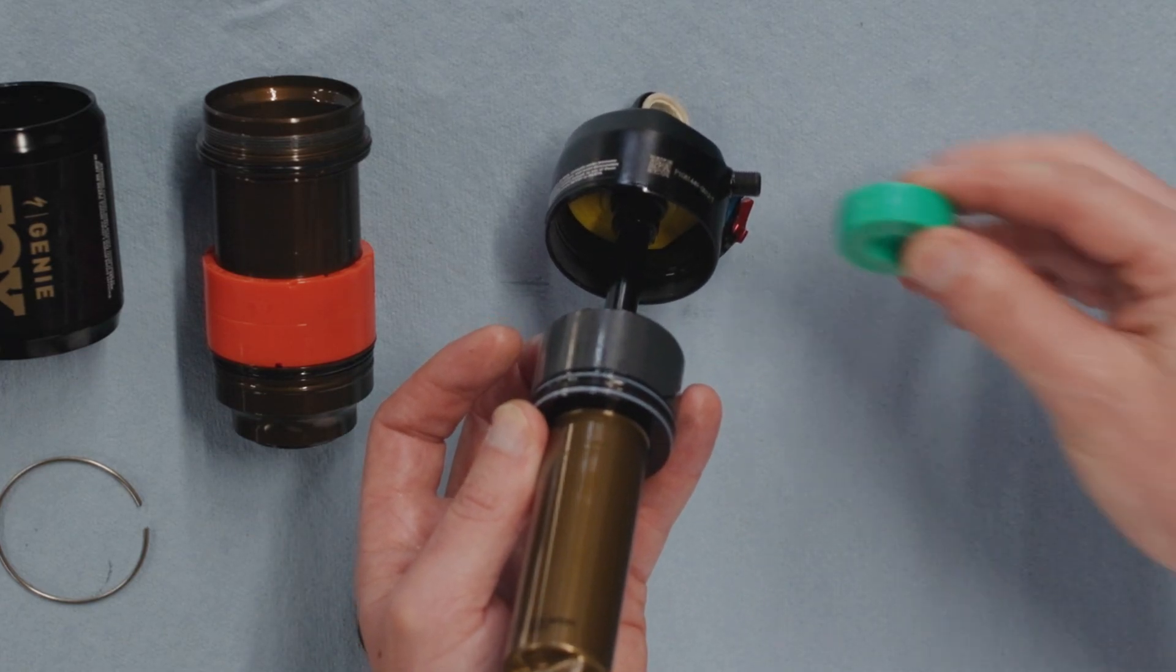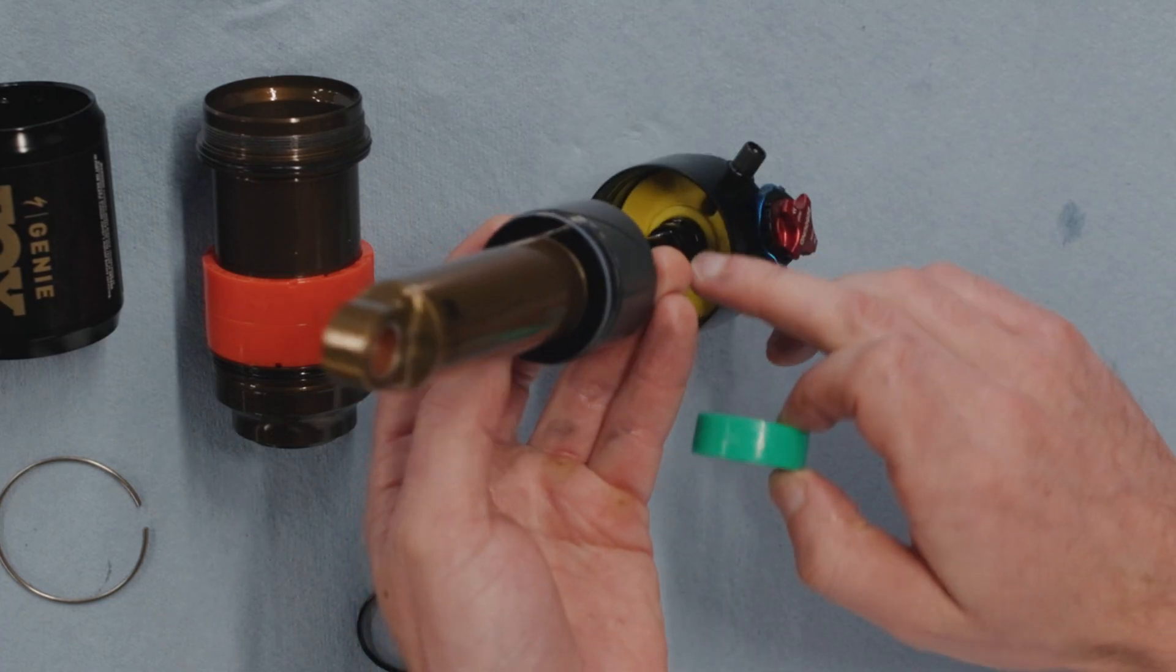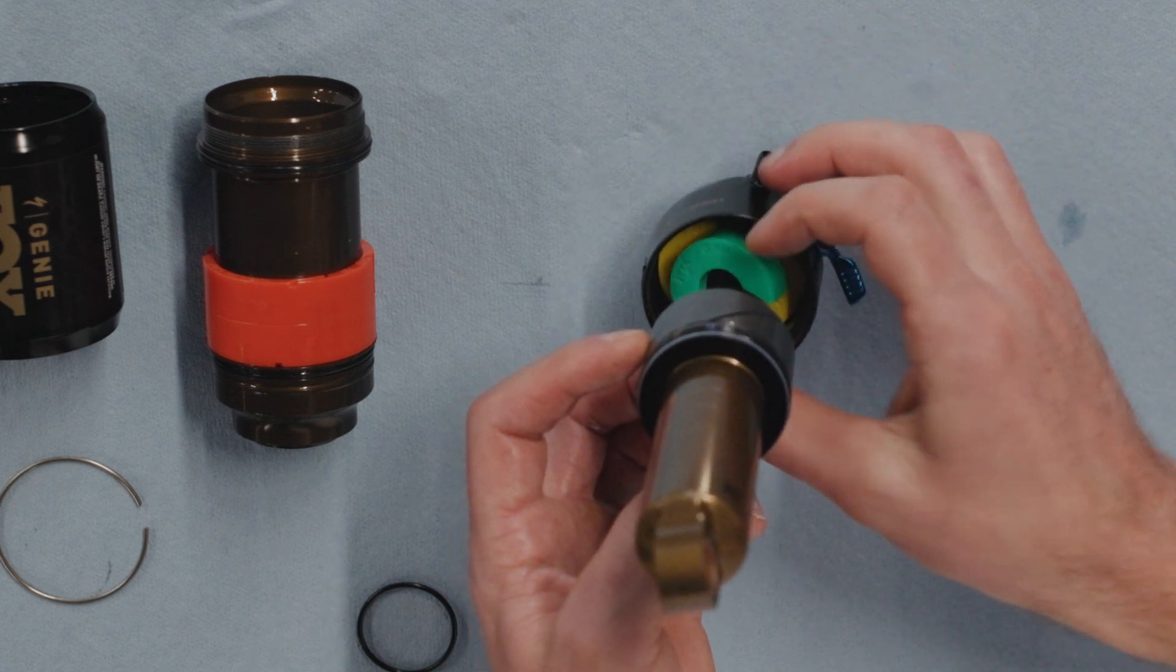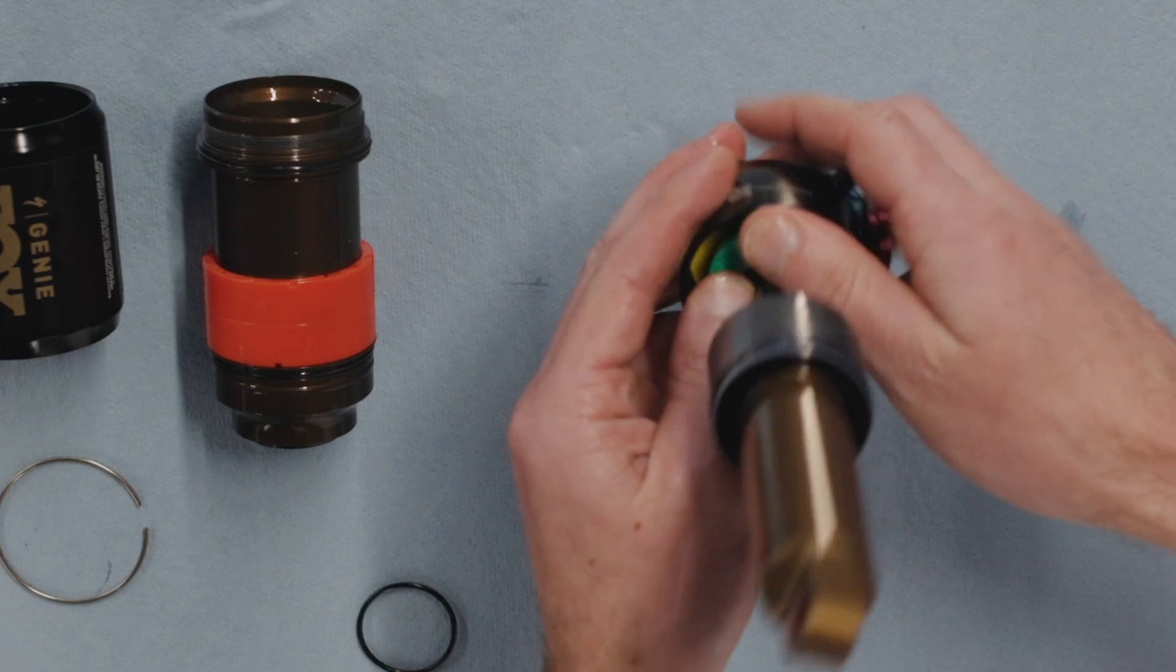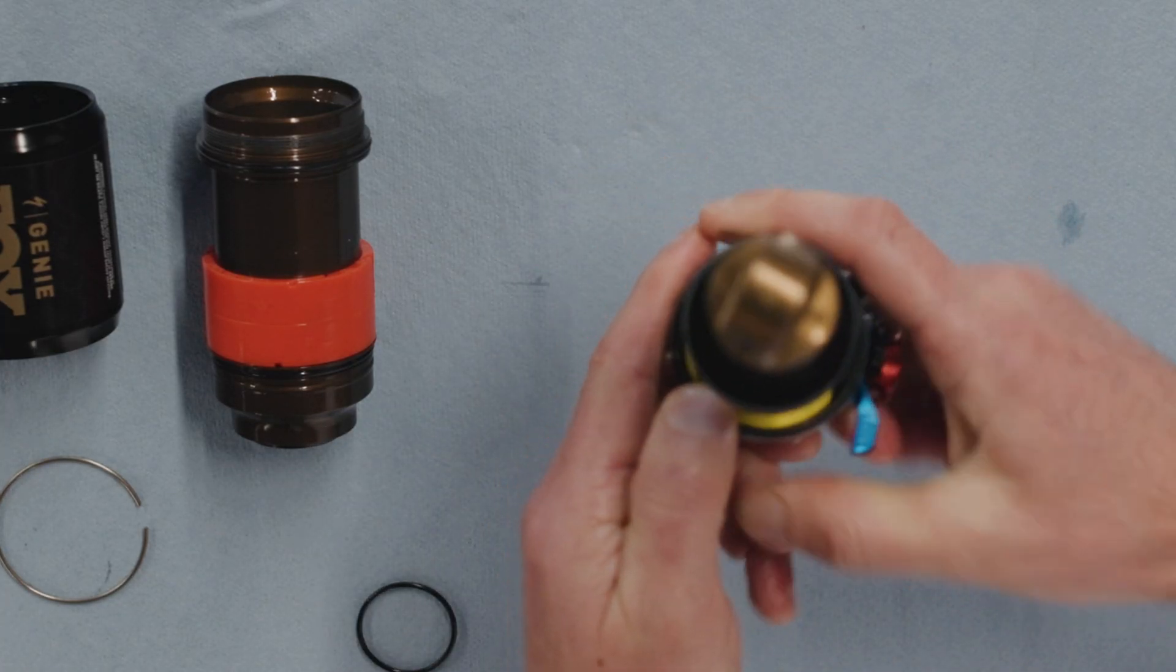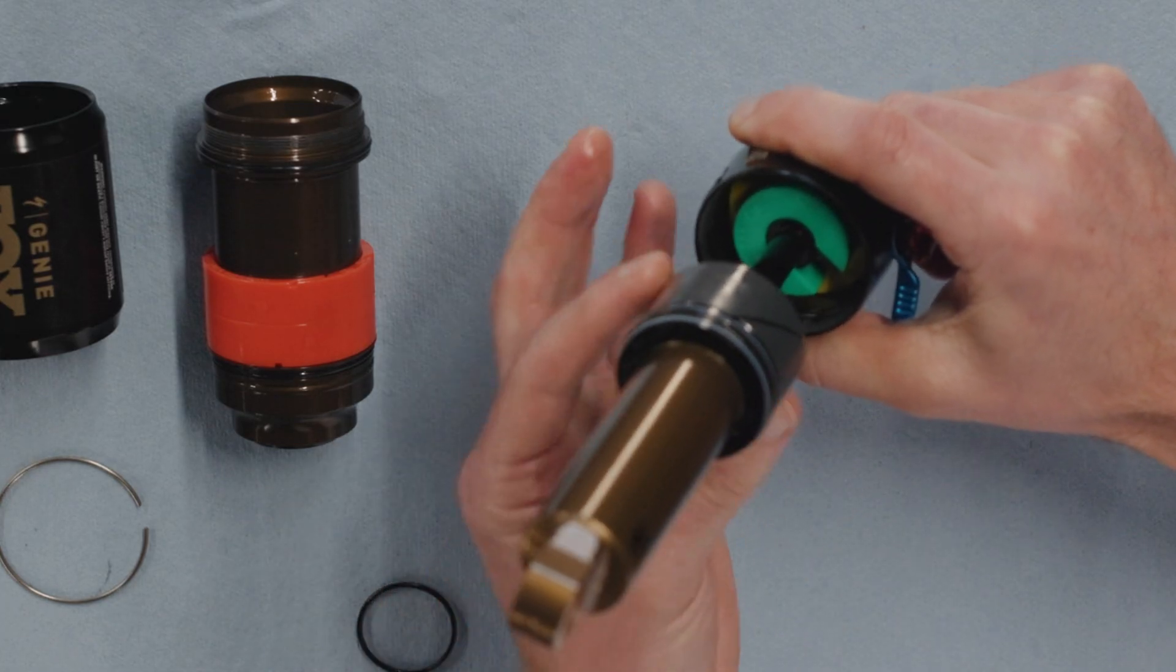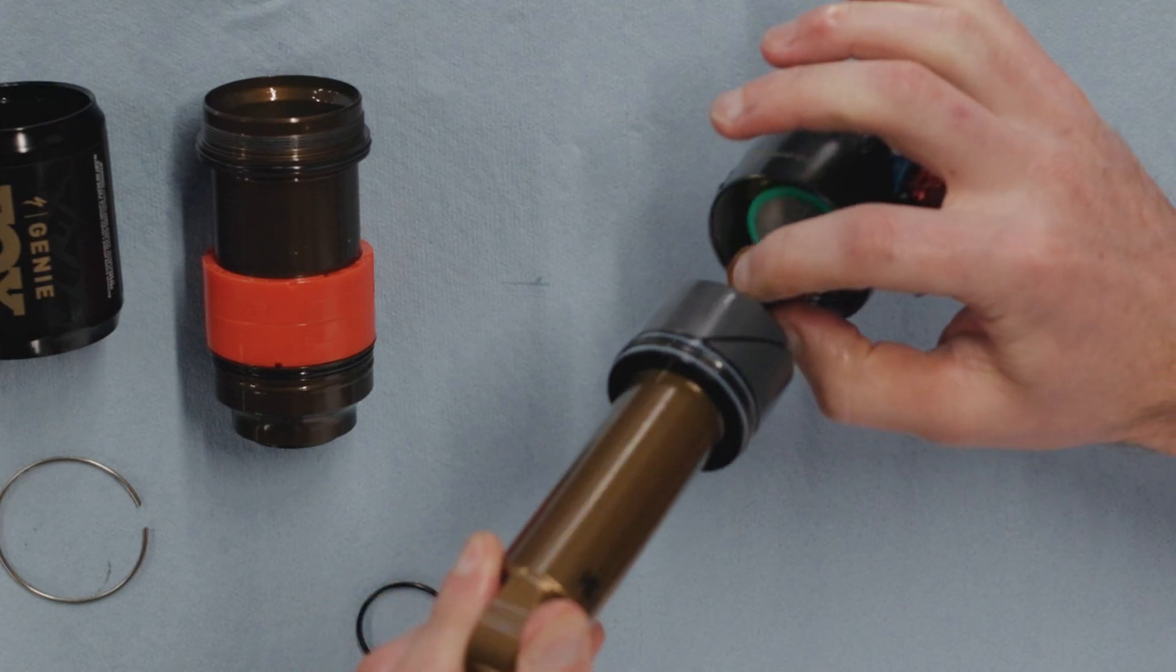And same thing, you're just going to clip this guy right on. You want the Fox logo facing up. And there is a keyed feature, just like any stock Fox float. You want to dial it in on the key and it'll snap right in place. Clips in. It is important to note, you do want the spacer flush with the boss of this eyelet. You don't want it sitting proud. And then we'll slide the washer and the jounce bumper back into place.